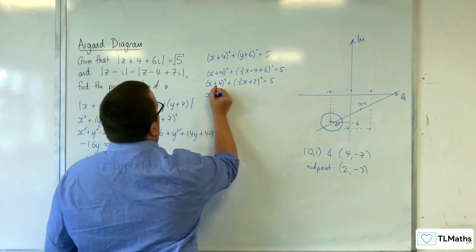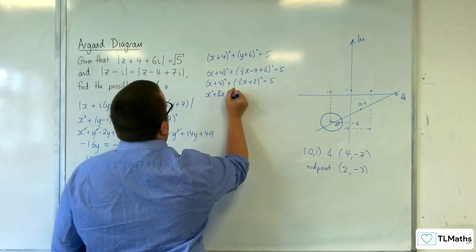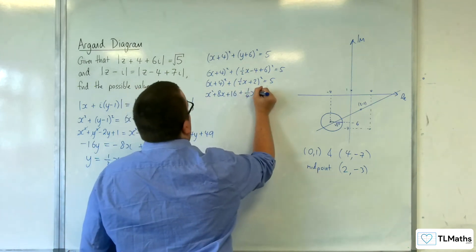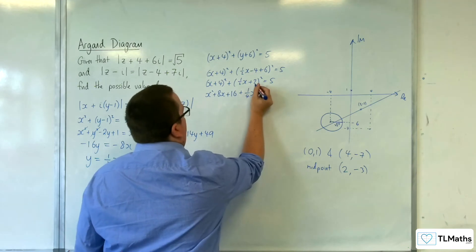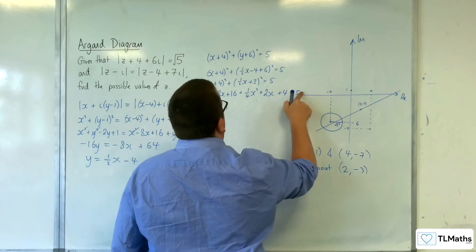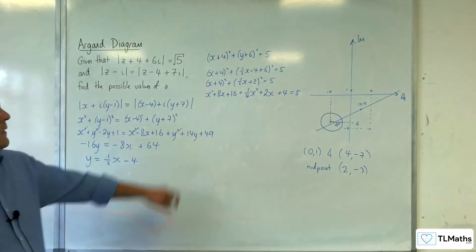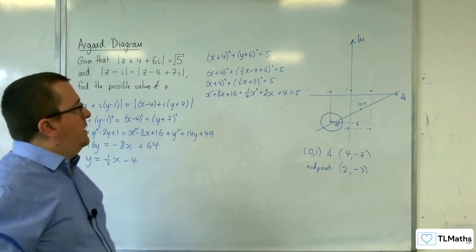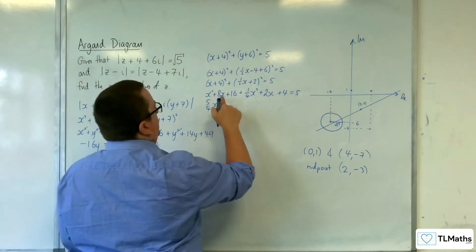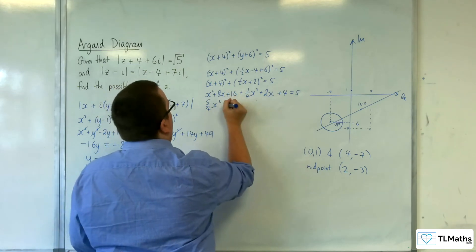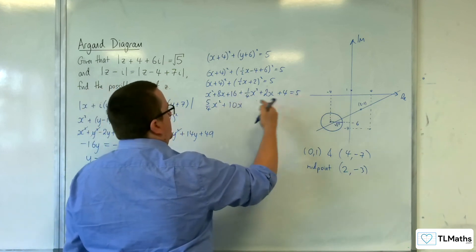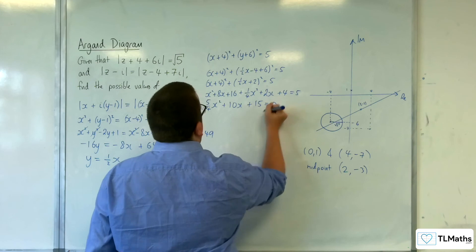So expanding everything out, we've got the x squared plus 8x plus 16. So plus 1 quarter x squared, so 1 half x times 2, so that's x, twice that, so 2x plus 4 equals 5. So we've got x squared plus 1 quarter x squared, so that's 5 quarters x squared. We've got 8x and 2x, so that's 10x. We've got 16 and 4, make 20, take 5 from both sides, so plus 15 equals 0.